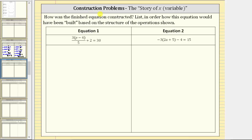In this video, we will describe the construction of equations using what's called the story of x, or the story of the variable. The idea is if we understand the steps in constructing an equation, we can undo the steps when we need to solve an equation. How was the finished equation constructed? List in order how this equation would have been built based on the structure of the operations shown.